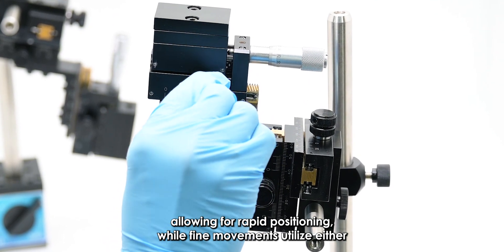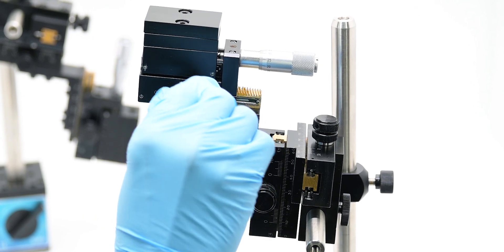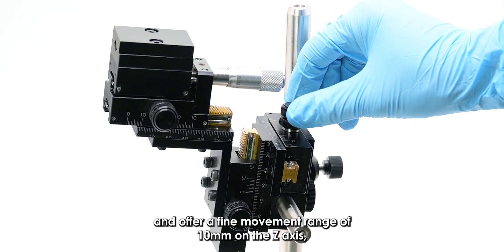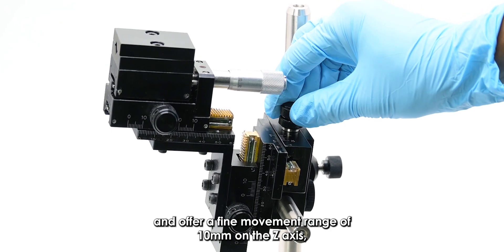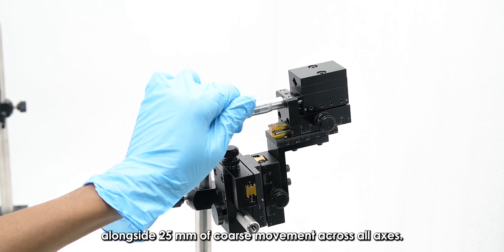Fine movements utilize either a micrometer or a fine-pitched lead screw for enhanced control. The manipulators can support probes up to 8mm in diameter and offer a fine movement range of 10mm on the Z-axis, alongside 25mm of coarse movement across all axes.